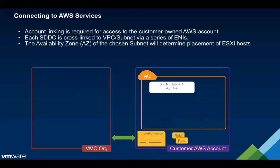We typically recommend a /26 at minimum for this subnet, and we like to have it dedicated for this purpose, as we'll be linking many things into it and want enough space without other resources present. Note the AZ of this subnet — it controls the placement of the SDDC. Whatever AZ this subnet is associated with is where we provision the SDDC. You'll select the VPC and subnet from the UI, which we can read from your account using the permissions from the linked roles. The final prerequisite is providing a management IP range for the SDDC itself.